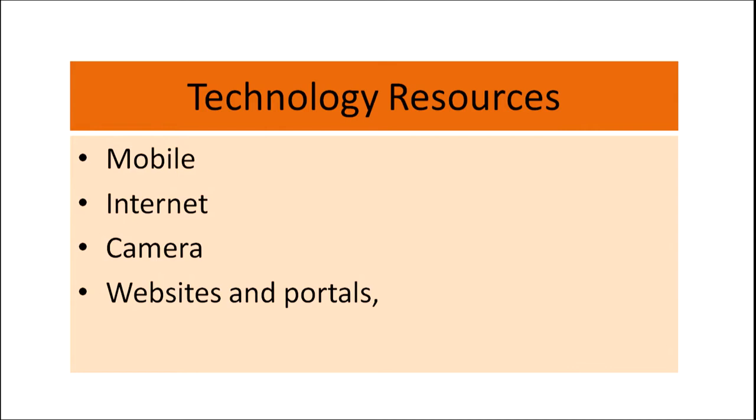The next category of resources is technological resources. Mobile, internet, camera, websites and portals — they are all part of technological resources. For mobile, you can use it to record audio — for example, chirping of birds or any other sound — and show it to children. You can also encourage children to make their own videos using a mobile or a camera and then share them with their friends in class.